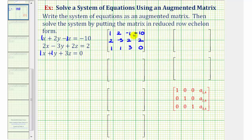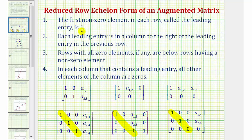Now let's review reduced row echelon form of an augmented matrix. Number one, the first non-zero element in each row, called the leading entry, must be one. Number two, each leading entry, or one, in a column is to the right of the leading entry, or one, in the previous row. Number three, rows with all zero elements, if any, are below rows having a non-zero element. If these first three conditions are met, we have row echelon form. This fourth condition is what makes reduced row echelon form: in each column that contains a leading entry, or one, all other elements of the column are zero.